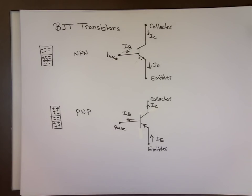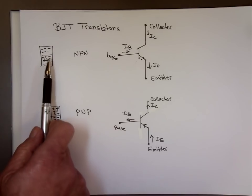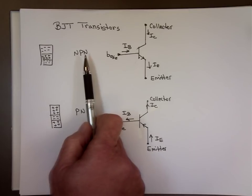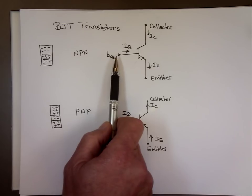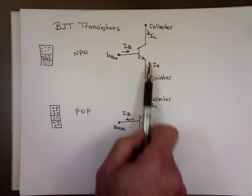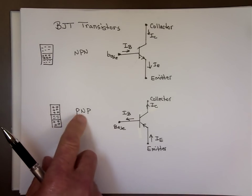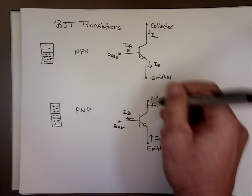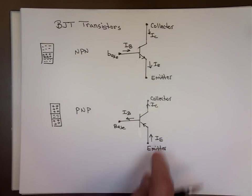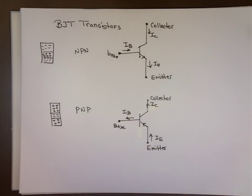Bipolar junction transistor. I draw two transistors here — one is called NPN transistor, meaning negative-positive-negative: you have three junctions. The emitter is on one end, the collector on the other, and the base in the middle. The currents are called I sub B, I sub E, and I sub C. The PNP transistor stands for positive-negative-positive. Instead of current coming out, it goes backward — the emitter current goes in, the base current comes out, and the collector current goes up.